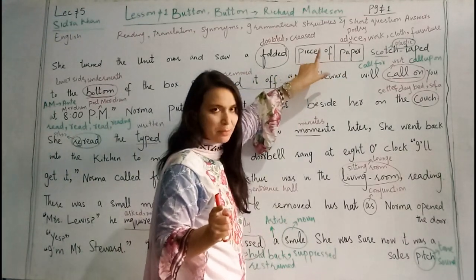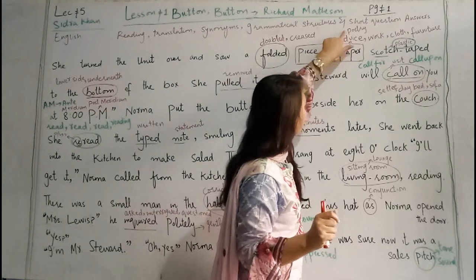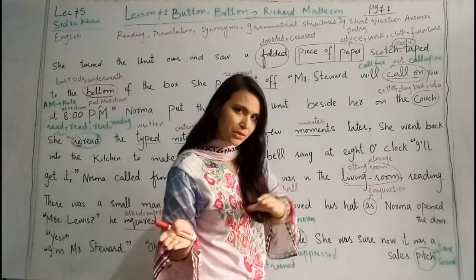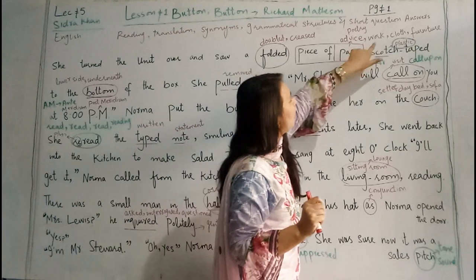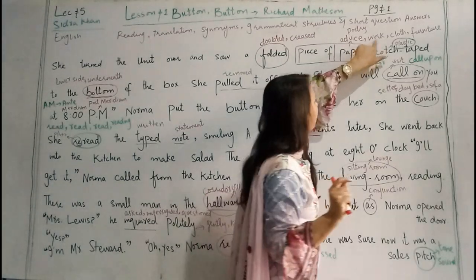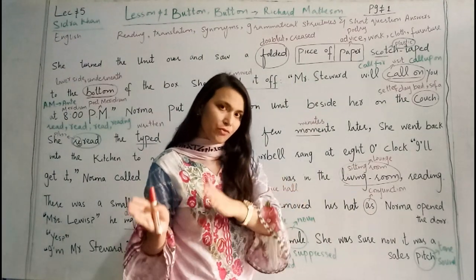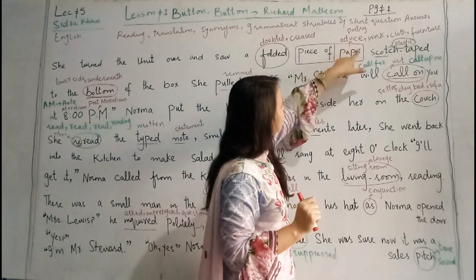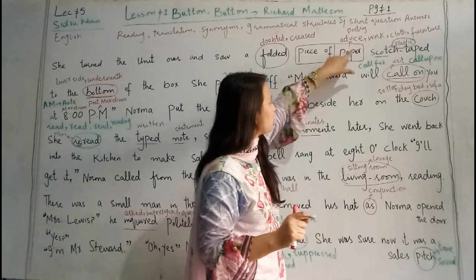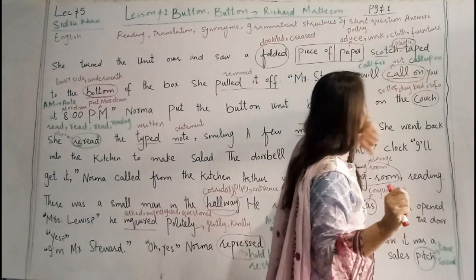Like, there are some other nouns jhinke saath bhi ham 'piece' use karte hain, such as: advice, poetry, work, cloth, furniture. A piece of advice, a piece of poetry, a piece of work — 'I have an urgent piece of work at home.' A piece of cloth, a piece of furniture — 'I want a good piece of furniture for my room.' So these are called nouns, and with nouns grammatically we use 'a piece of': a piece of paper, a piece of advice, a piece of poetry, a piece of work, a piece of cloth, a piece of furniture.